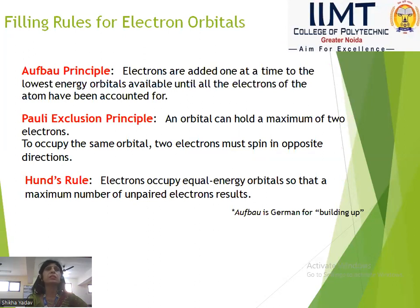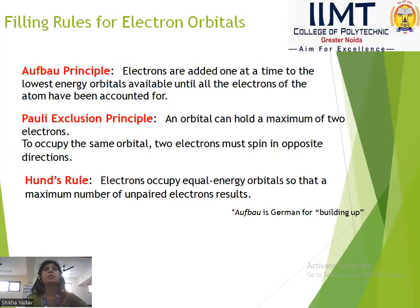We have already discussed these filling rules. In the Aufbau Principle, electrons are added one at a time to the lowest energy orbital available until all electrons of the atom have been accounted for, adding electron one by one. For Pauli's rule: an orbital can hold a maximum of 2 electrons, and these 2 electrons must spin in opposite directions.